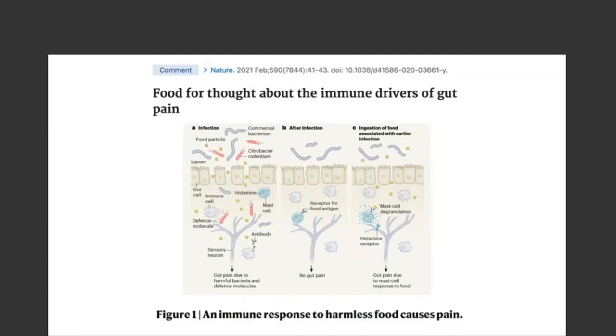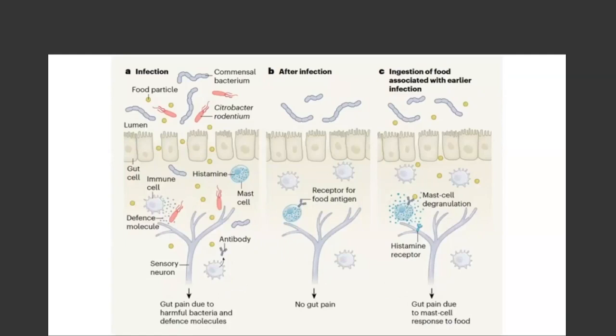A related article titled 'Food for Thought About the Immune Drivers of Gut Pain' summarizes these findings with a visual. Under panel A, they talk about the initial infection as one of the ways hypersensitivity to food antigens may be initiated. This fits within the general recognition that many IBS patients may have initiated symptoms based on an initial infection. In their model, infection with a pathogen causes leaky gut and inflammation, allowing food molecules to get through and stimulate an immune response.